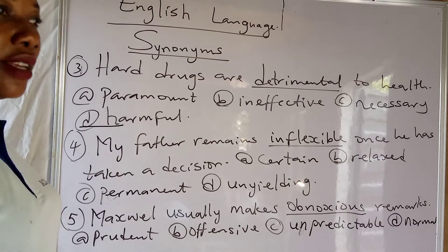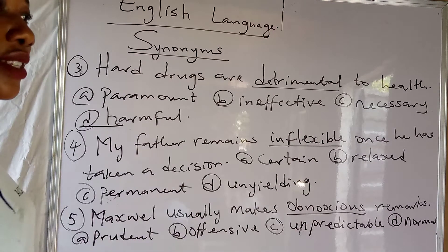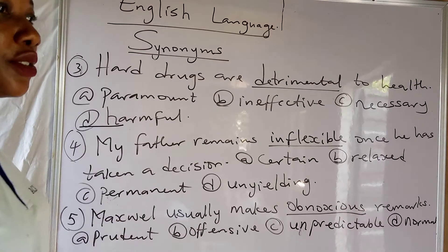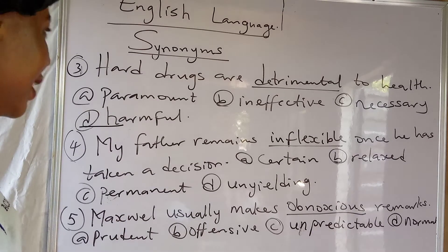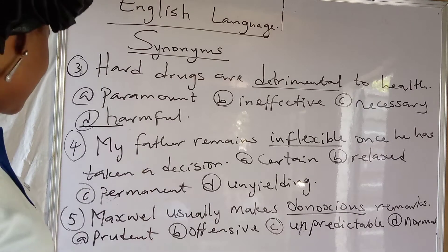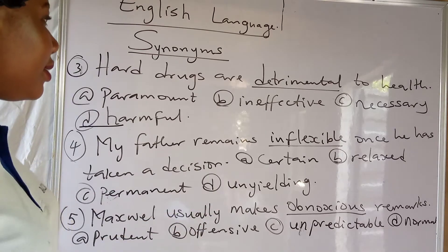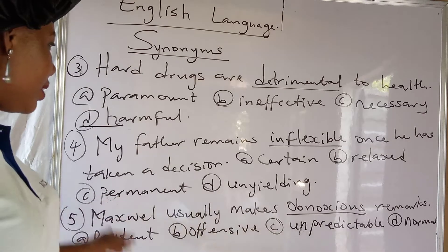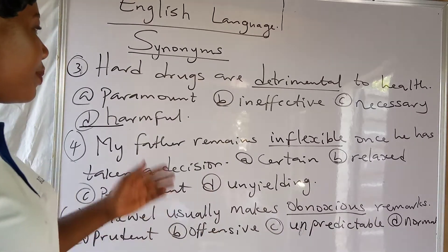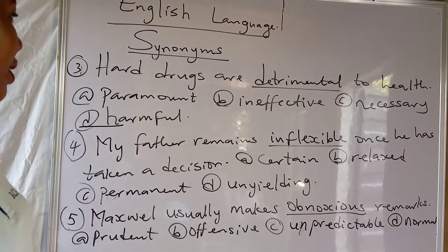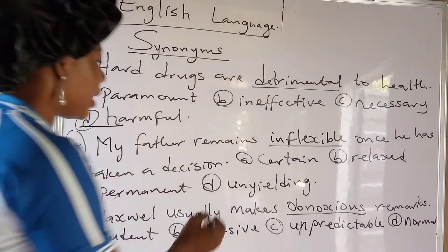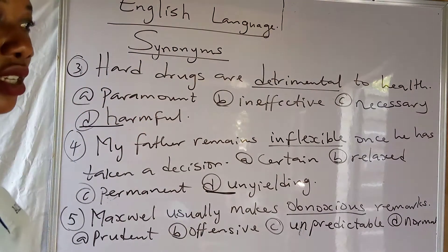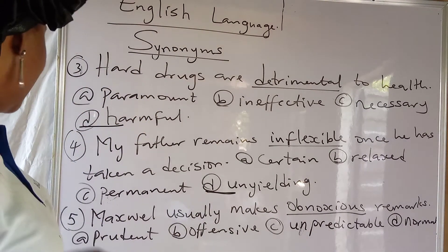Someone that is inflexible is not likely to bend — once he has said something, he means it and that thing has to take place the way he said it. The options are: satay, relaxed, permanence, and unheeding. The best answer is 'unheeding' — something that does not easily bend or change a decision.